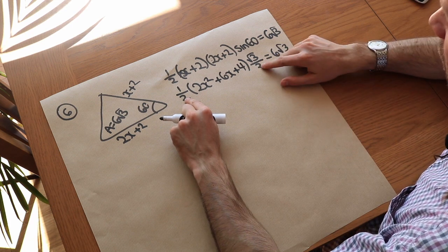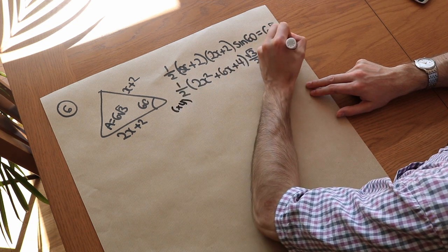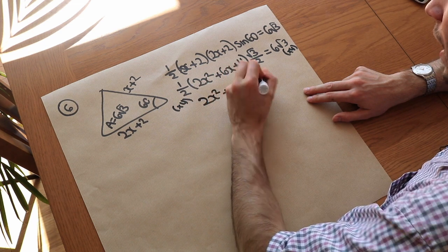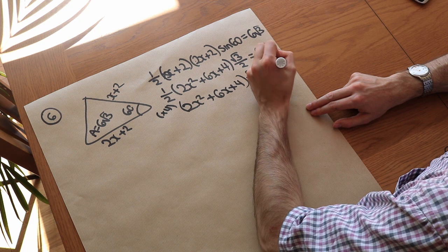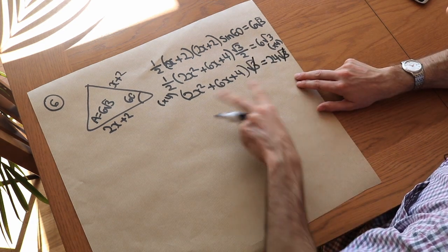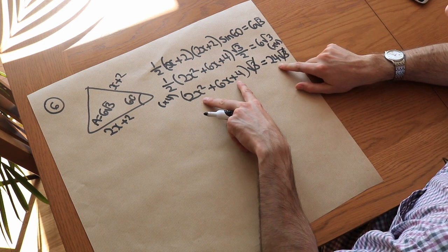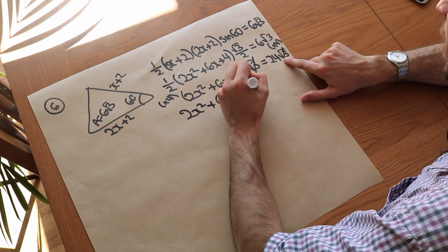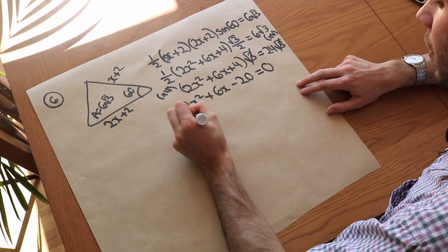To eliminate both fractions, multiply both sides by 4, giving (2x² + 6x + 4) times √3 equals 24√3. Dividing both sides by √3 leaves 2x² + 6x + 4 equals 24. Subtracting 24 gives 2x² + 6x minus 20 equals 0. Dividing by 2 gives x² + 3x minus 10 equals 0.